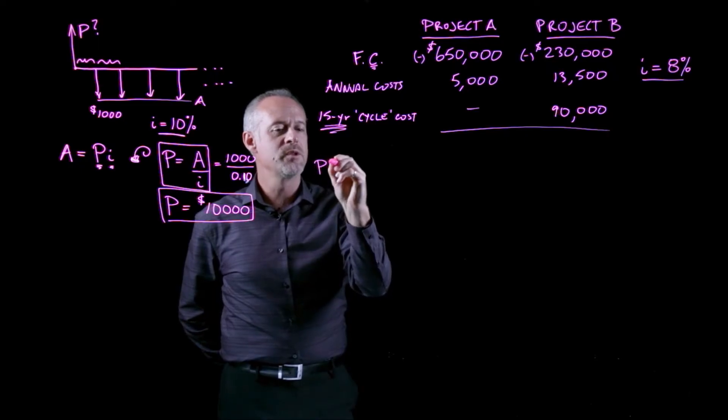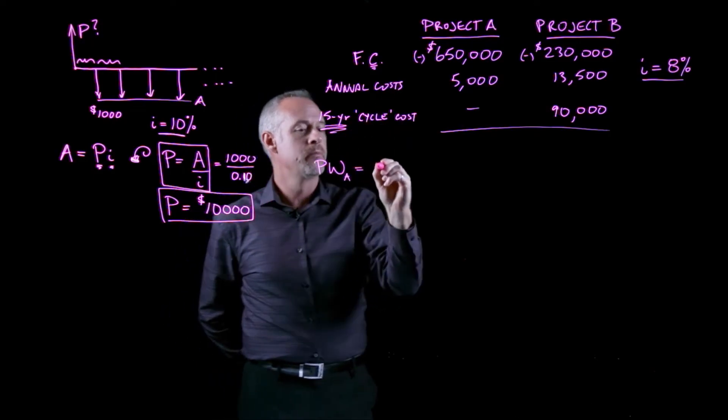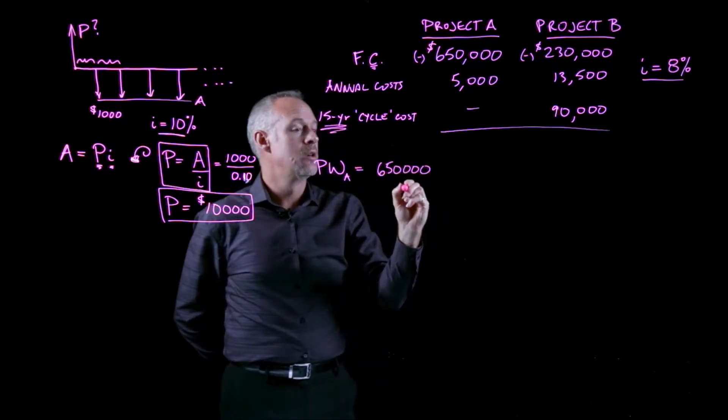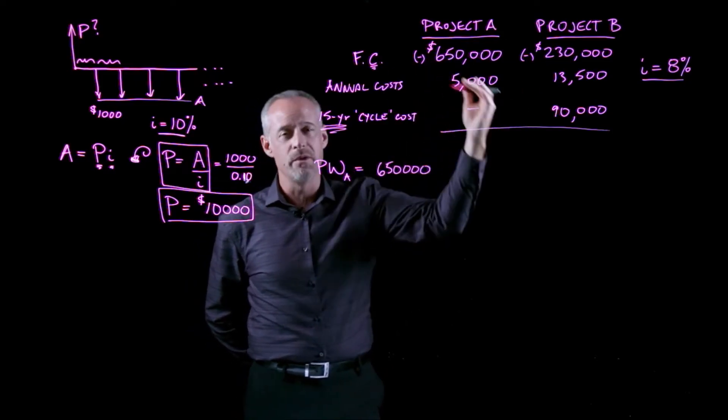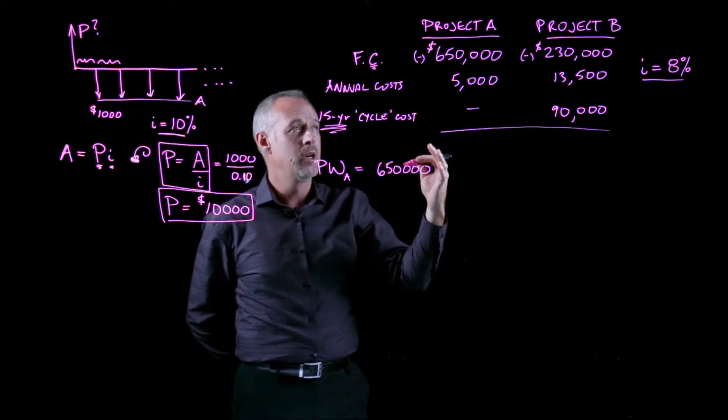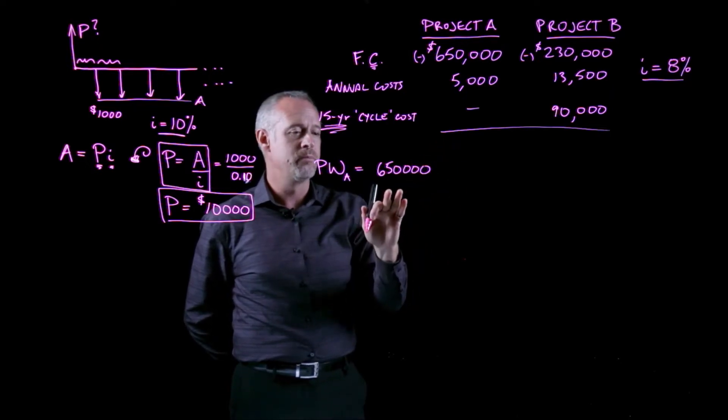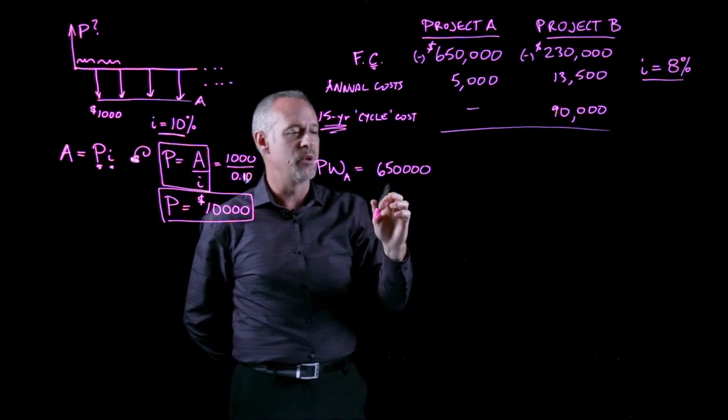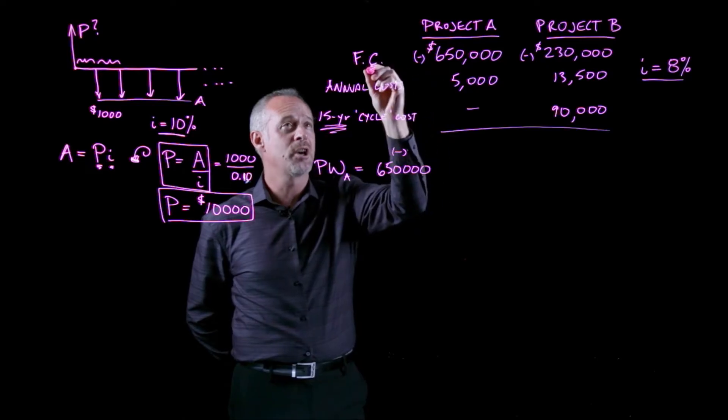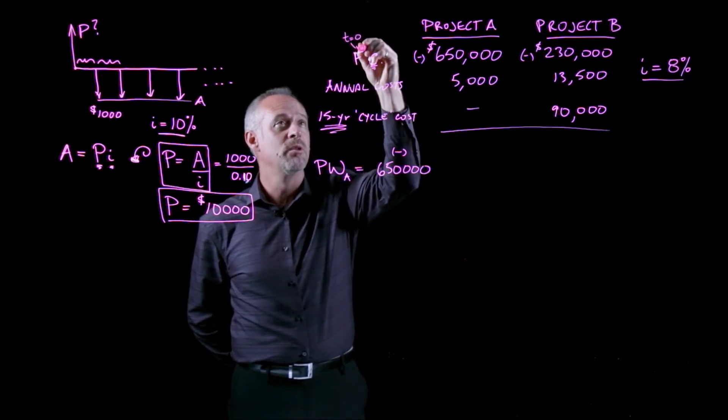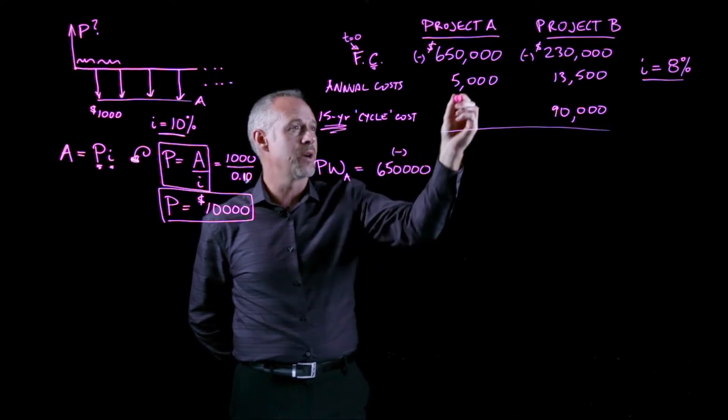So if I write down the present worth of project A, the present worth of project A is going to be my $650,000, and we'll take that really as, I'll ignore the negative for the moment, because everything in both of these problems are costs. So everything is negative. So we don't really need to use the sign. We only need it if we have both positives and negatives. So for the moment, the present worth we'll just use as positive numbers, but really they are costs. So the $650,000, that's the first cost. And the first cost, that's really the t equal to zero time. So this is already the present. I don't need to do anything to that.